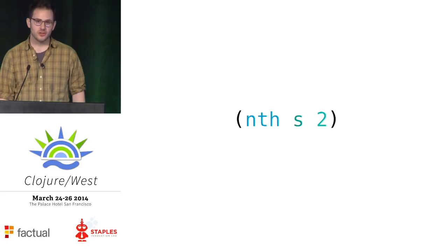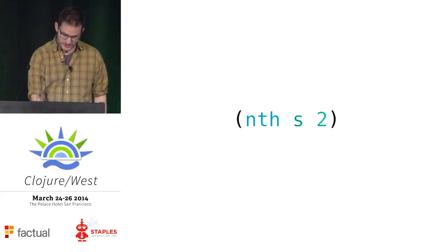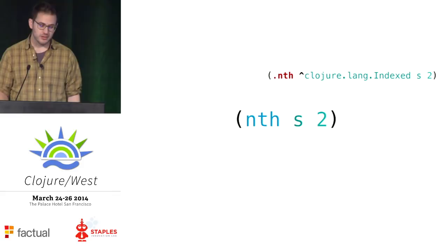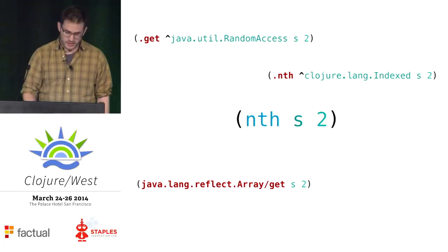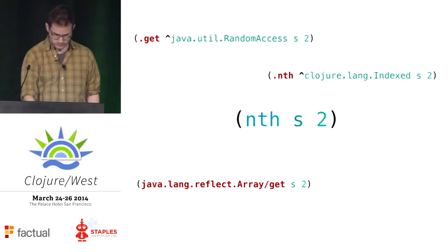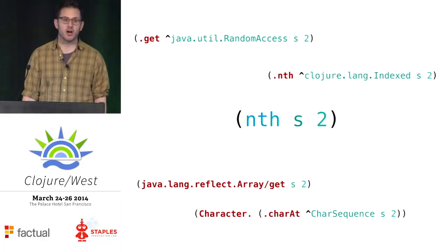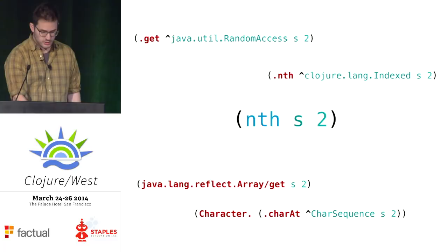So what happens when we call nth s2? We know what it returns — the third element of the sequence — but how do we actually get there? If it's a vector, we call ClojureLang Indexed, which has an nth method. If it's an array, we simply look up the third element. If it is marked with the java.util RandomAccess interface, then we can efficiently call get on java.util List. If it's a string or some other character sequence, we call charAt, and then box it in a capital-C Character, because nth returns an object, not a primitive.